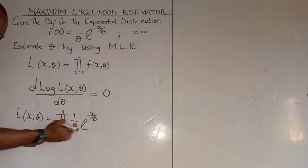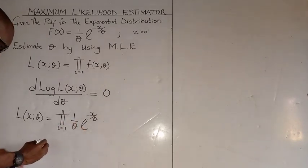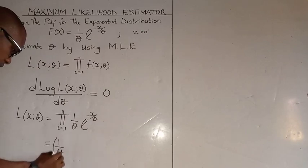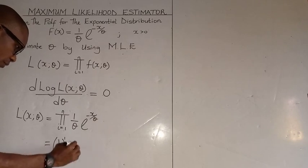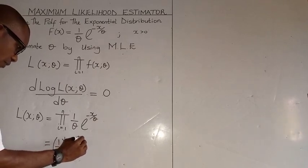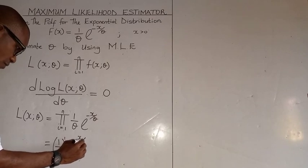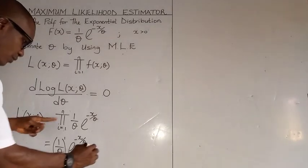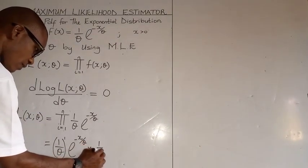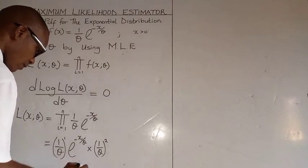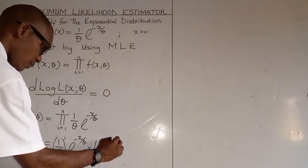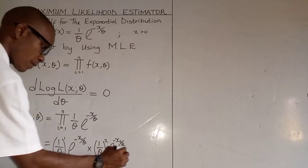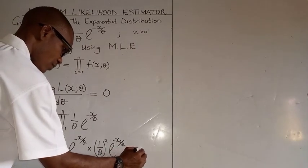So, if we take the product of this, we get something like: 1 over theta times exponential of minus x₁ over theta. Multiplied by — because this sign means product — 1 over theta squared, times exponential of minus x₂ over theta. Multiply by, and it continues like that.